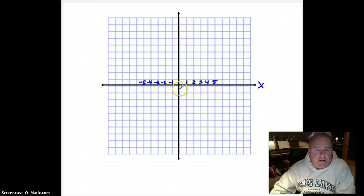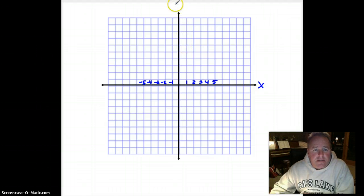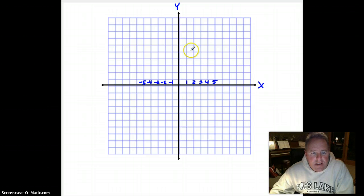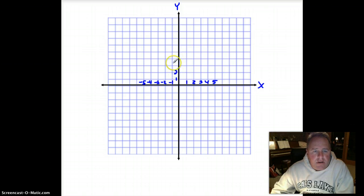Our vertical axis is known as our y-axis. And it's kind of like a thermometer, really, in the fact that if we start here at zero and we go up, it's going to be our positive numbers. One, two, three, four, five.